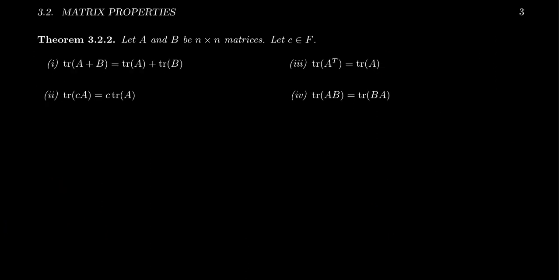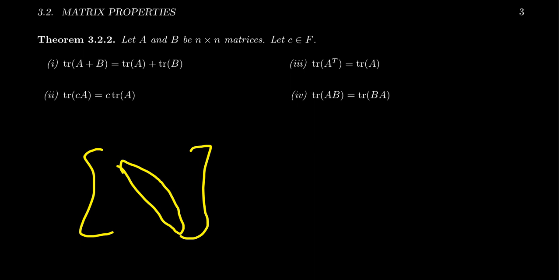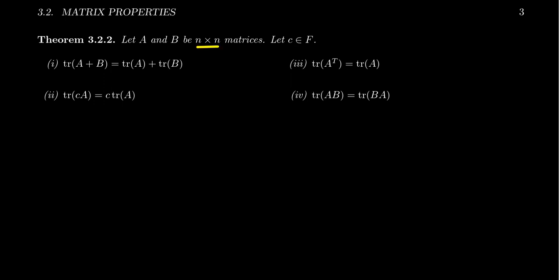Let's talk about the trace for a moment. The trace of a matrix is the sum of the main diagonal entries, defined only for square matrices. If you take the trace of the sum of two n by n matrices, it equals trace(A) plus trace(B) — the trace preserves addition. That makes sense because the diagonal entries of A + B are just the sums of the corresponding diagonal entries.